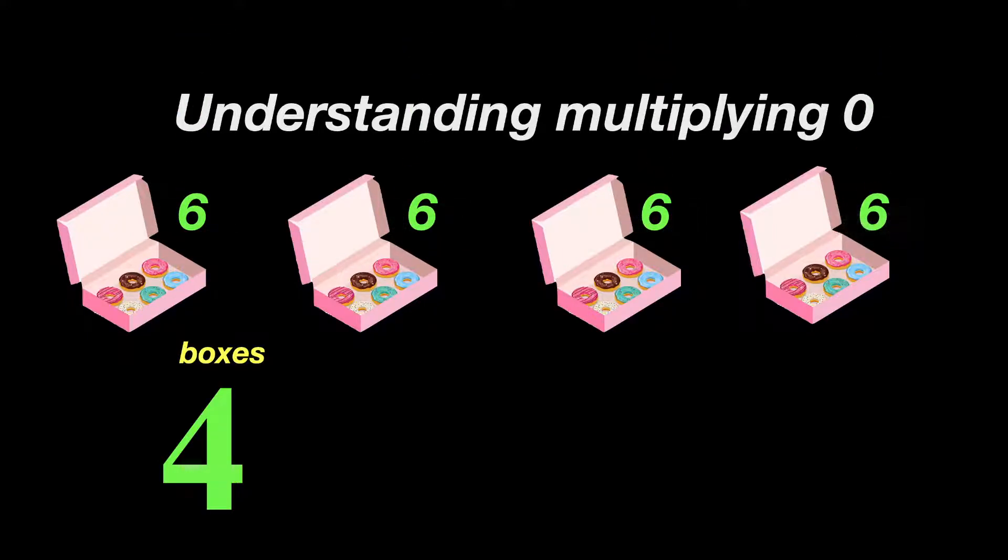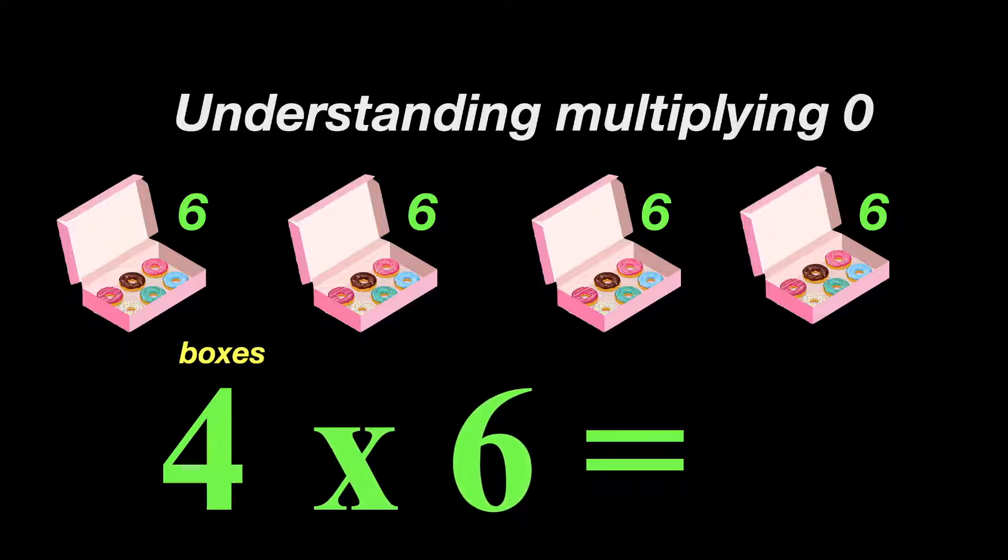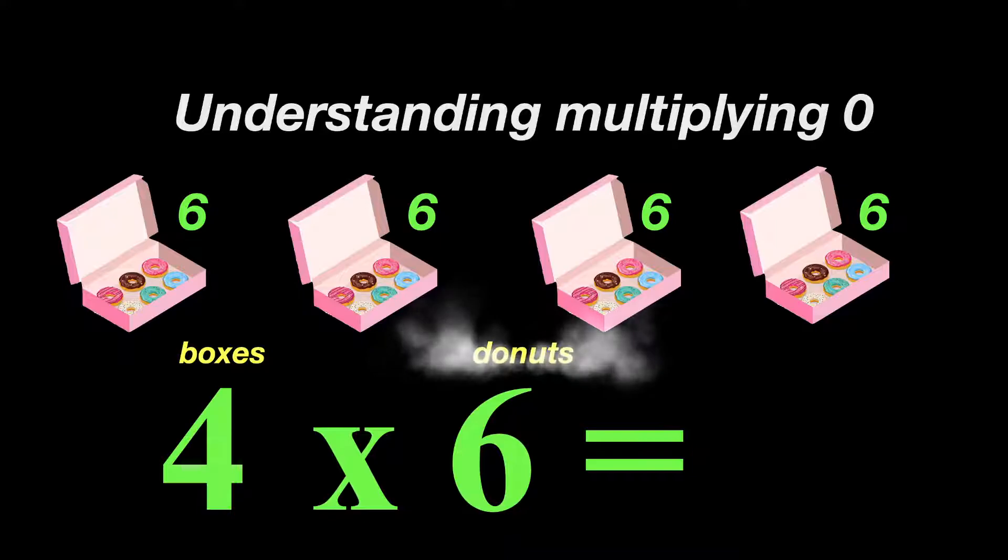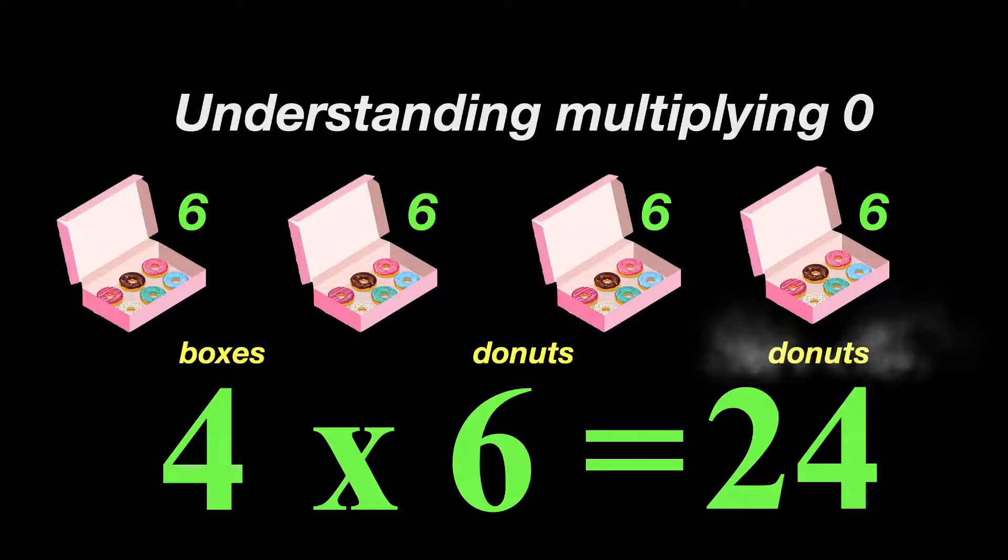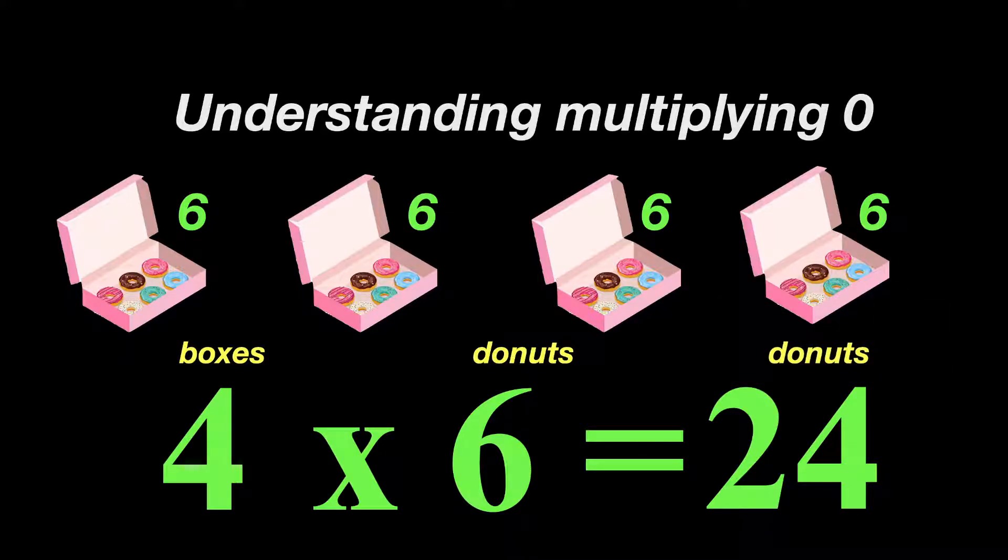So we would say that's four boxes of donuts times six donuts. That would equal 24 donuts. Remember, it's not 24 boxes, it's 24 donuts. Now how does that talk about zeros? Well let's take it a step further.